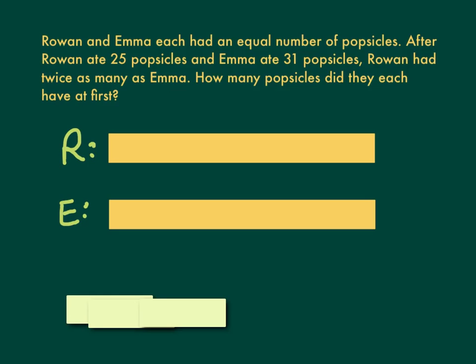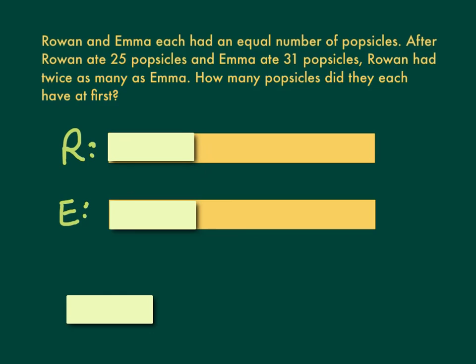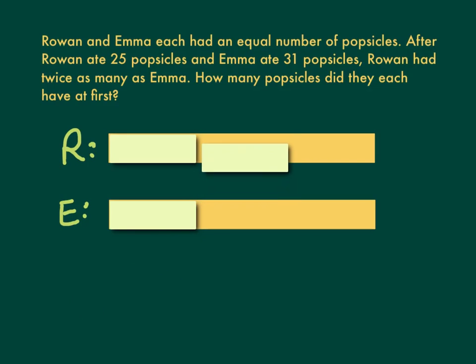When it's all over, if Emma's got one block, then Rowan has two. When it's all done, Rowan has twice as many — so Rowan's got the same as Emma, but she's got it twice.